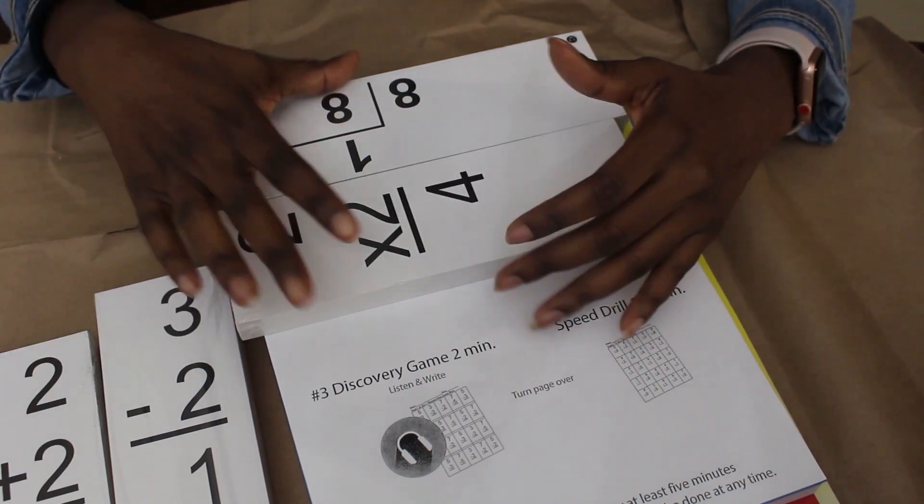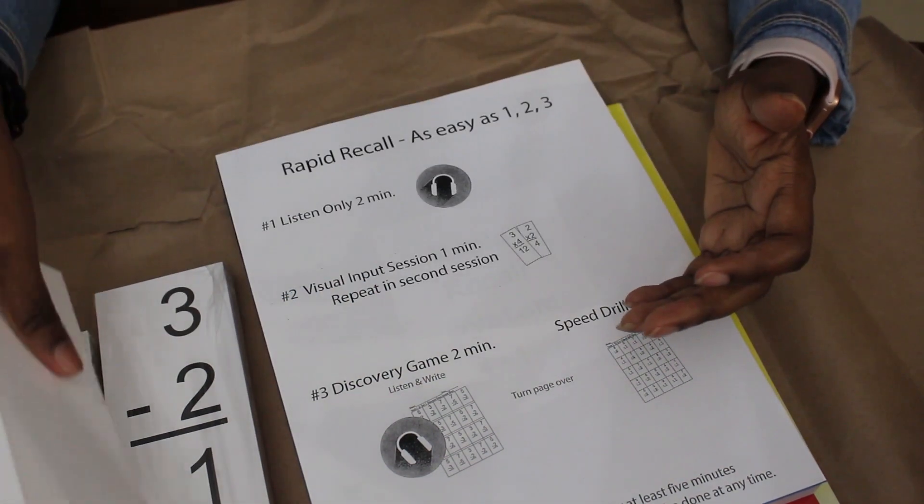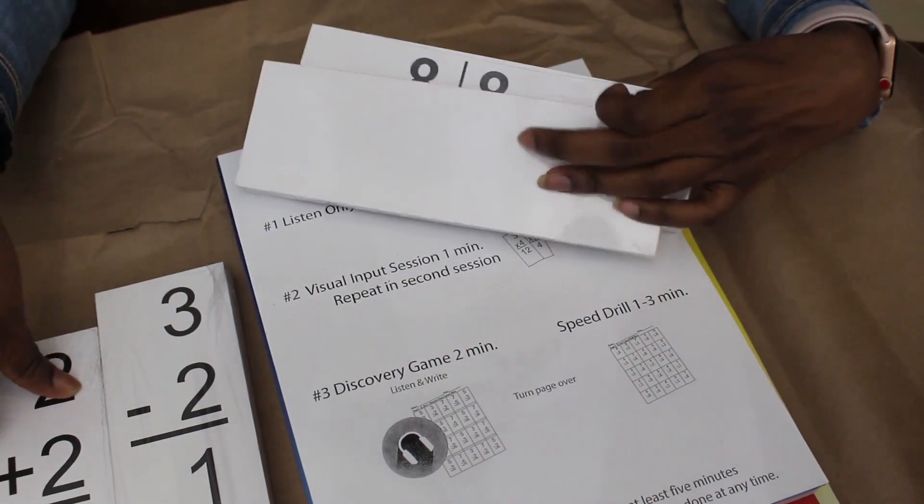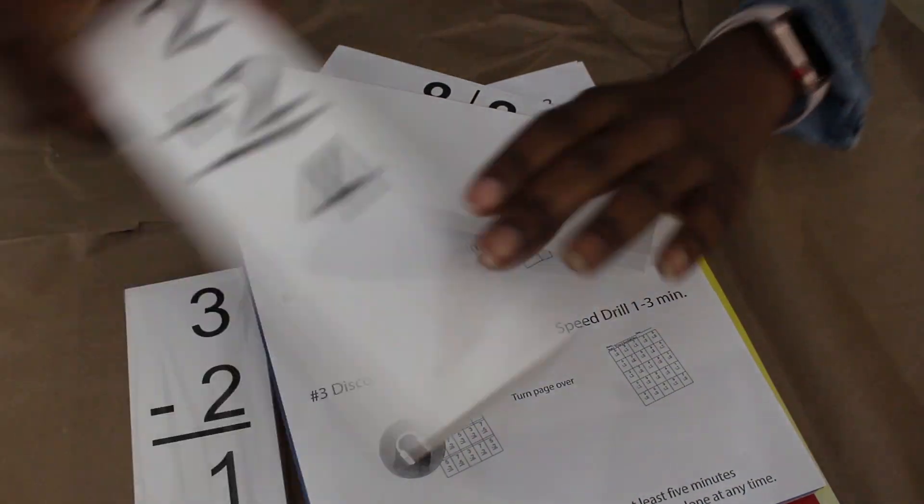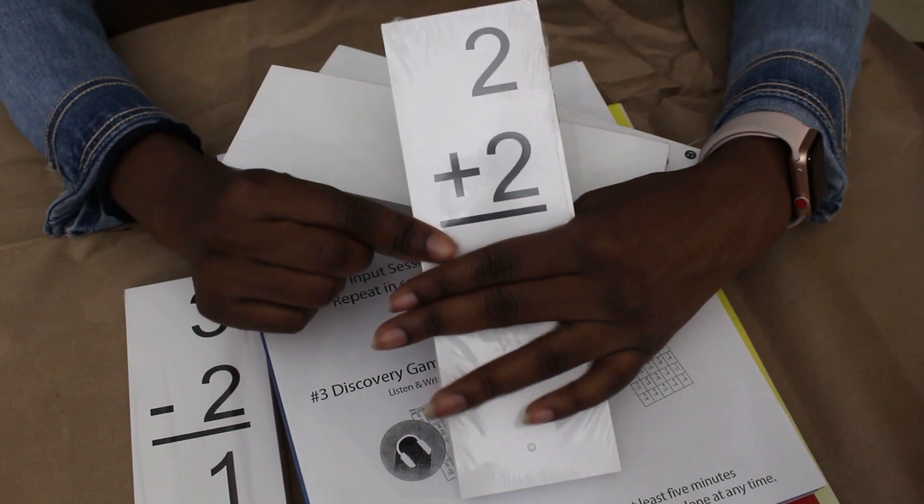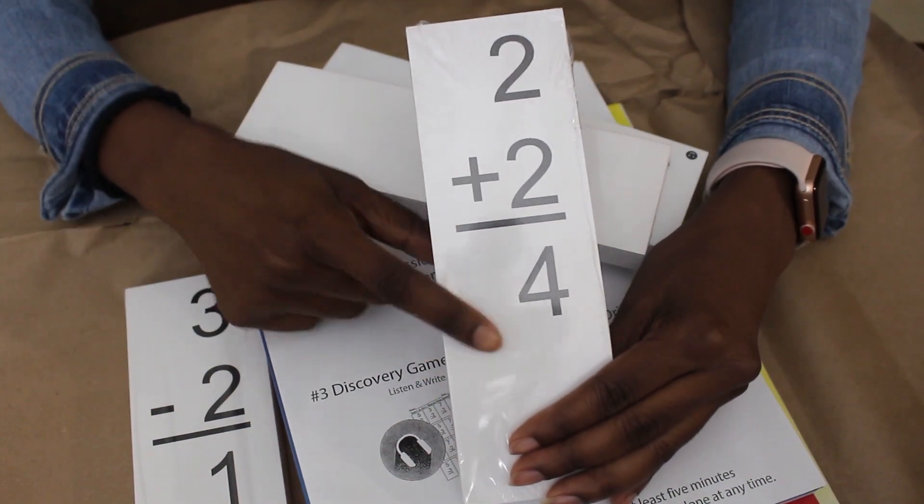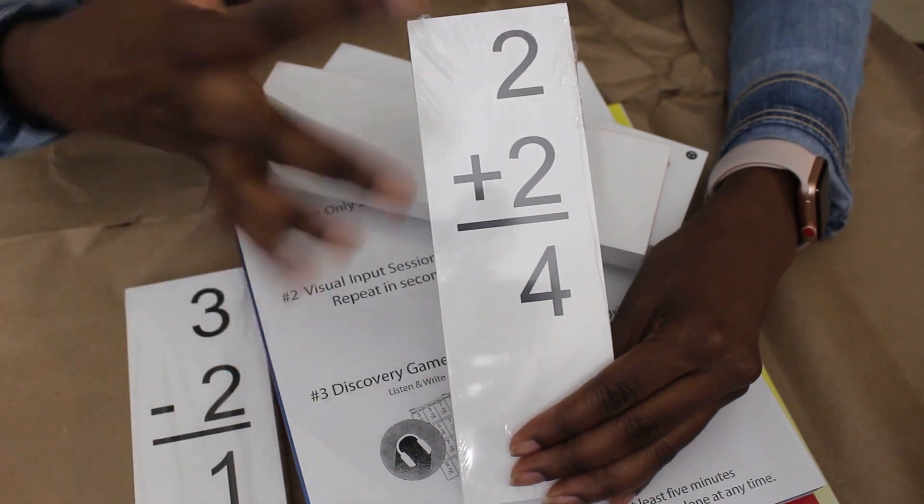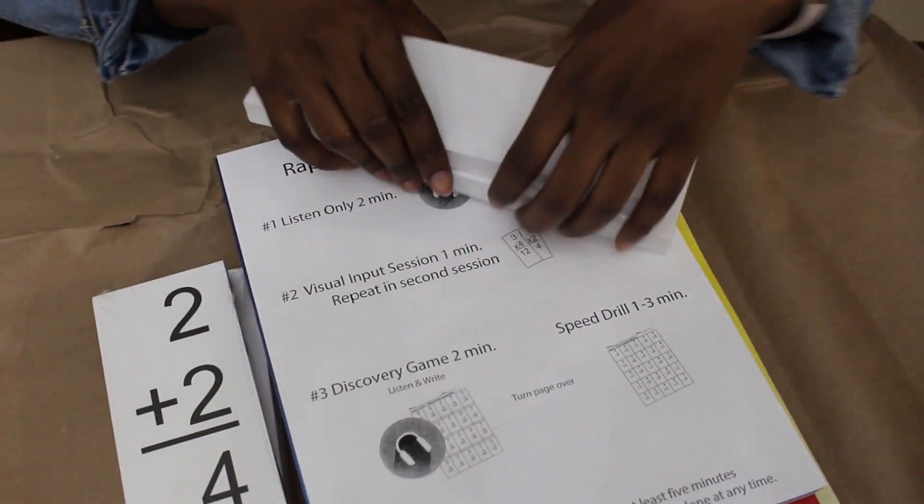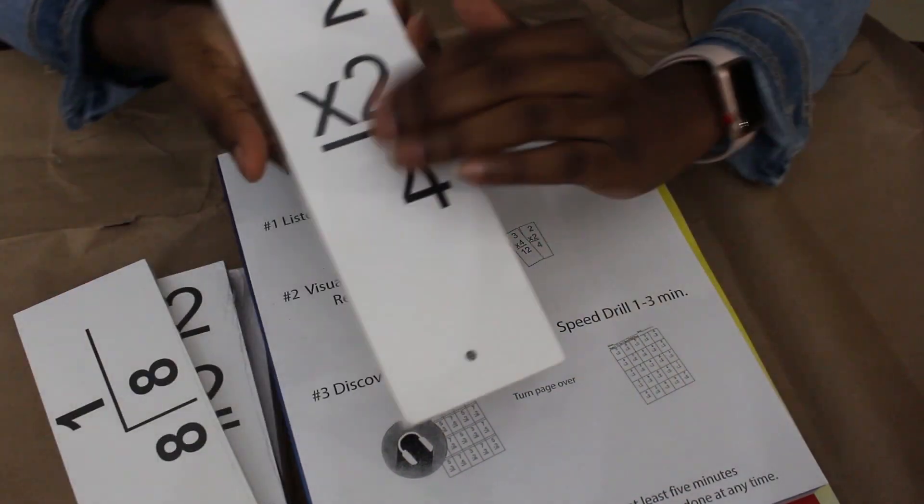input rather than just output. So rather than having the child tell you 2 plus 2 equals 4, it's more about putting it into the child. You'll tell them 2 plus 2 equals 4, and you'll give them multiple times throughout the day of input in different ways, whether it's visual